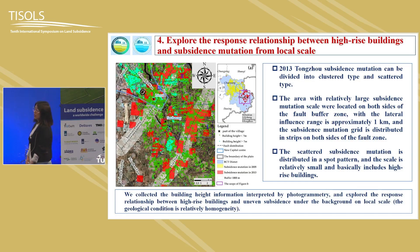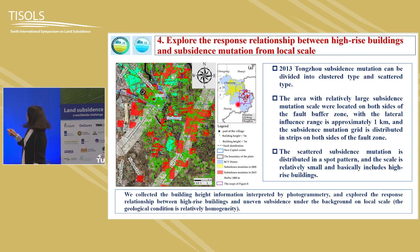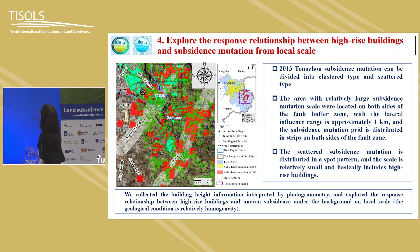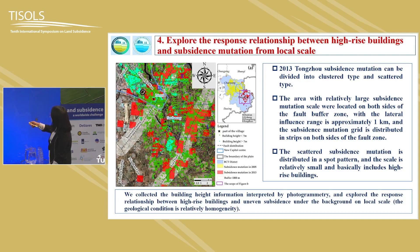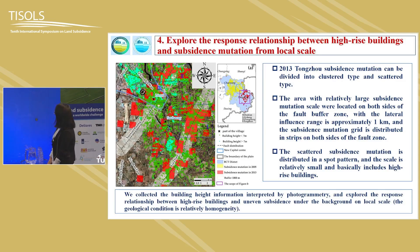From the local scale, we also explore high-rise buildings and subsidence mutations. The red rectangles mark areas with mutations in 2013. In 2013, the Tongzhou subsidence mutations can be divided into two types. The cluster type covers areas with relatively large subsidence mutation scales, located on both sides of fault buffer zones of about one kilometer. The scattered subsidence mutations distribute in spot patterns with relatively small scales, and basically include high-rise buildings — the light blue areas represent high buildings.